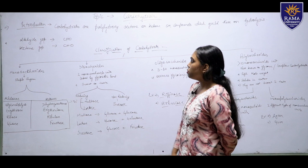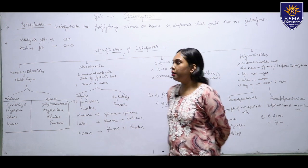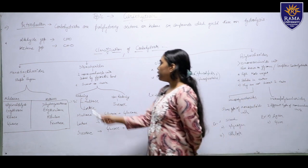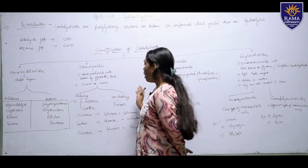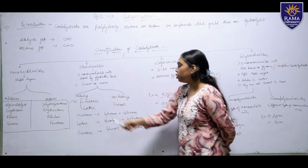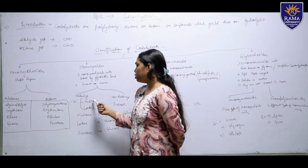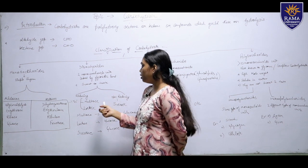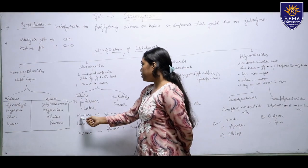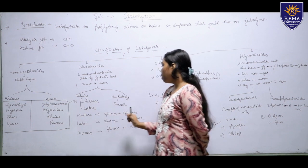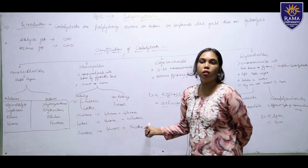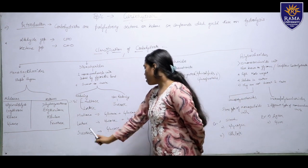Now, disaccharides. Disaccharides have two monosaccharide units linked by a glycosidic bond and are sweet in taste. Disaccharides are subdivided into two groups: reducing sugars and non-reducing sugars. The reducing sugars are maltose and lactose. The non-reducing sugar is sucrose. Maltose has two glucose residues, lactose has glucose and galactose, and sucrose has glucose and fructose.